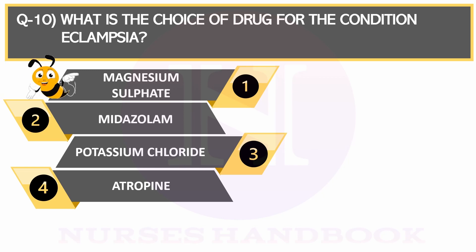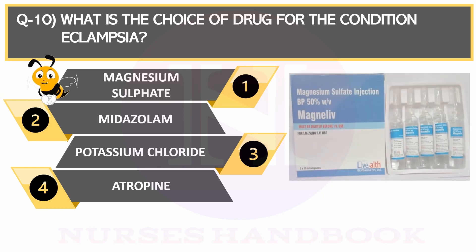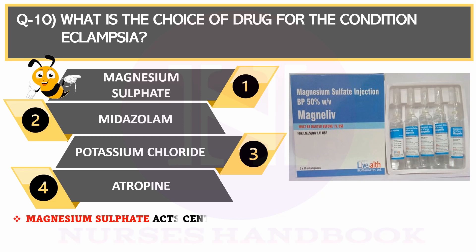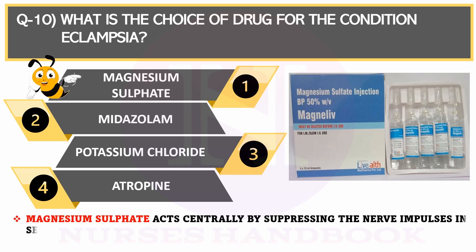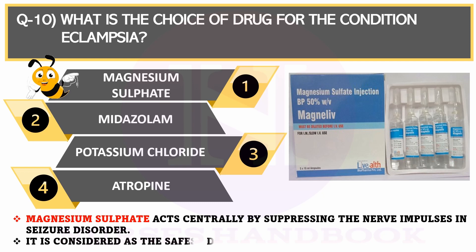The correct answer is Magnesium sulfate. Magnesium sulfate acts centrally by suppressing the nerve impulses in seizure disorder. It is considered the safest drug of choice in pregnancy.